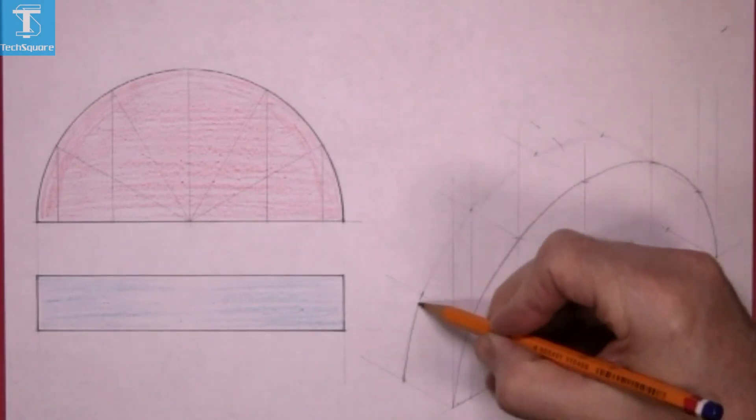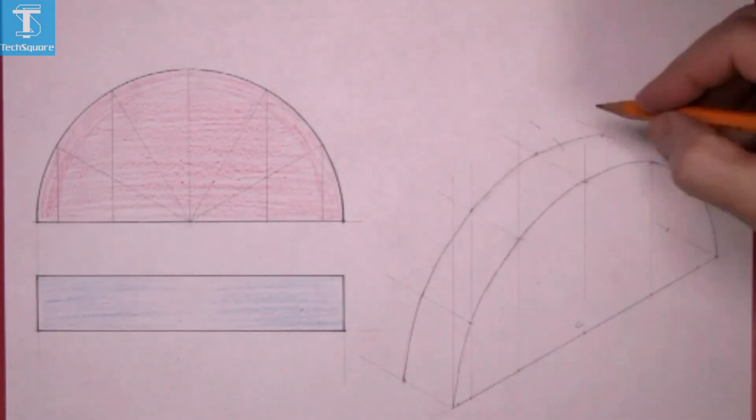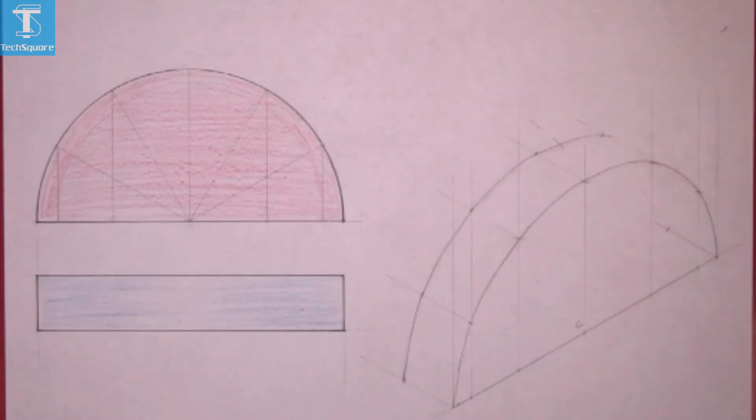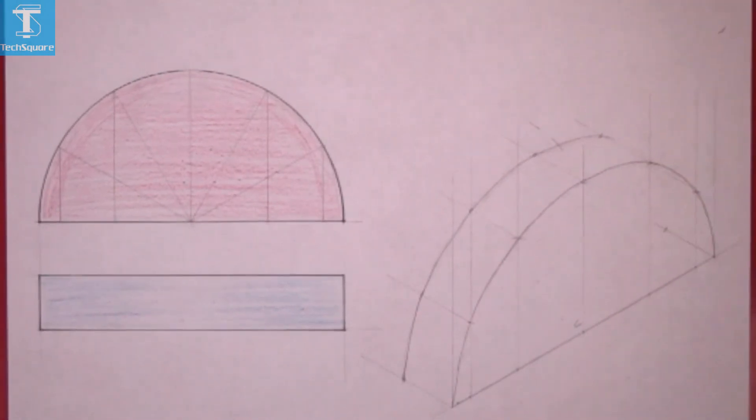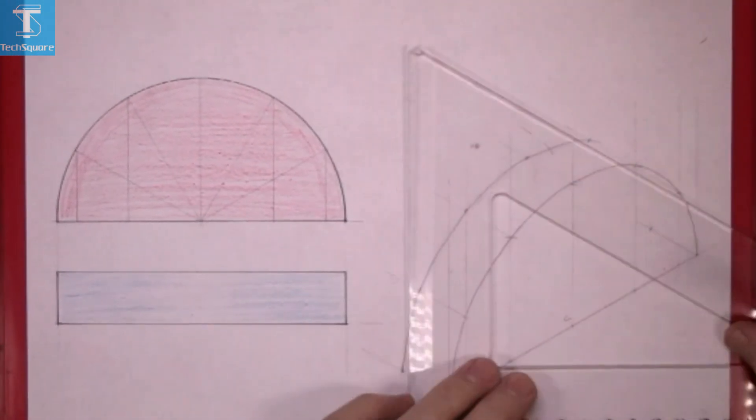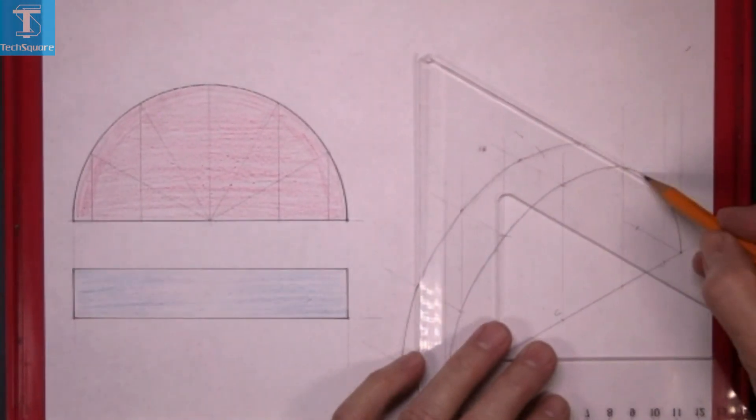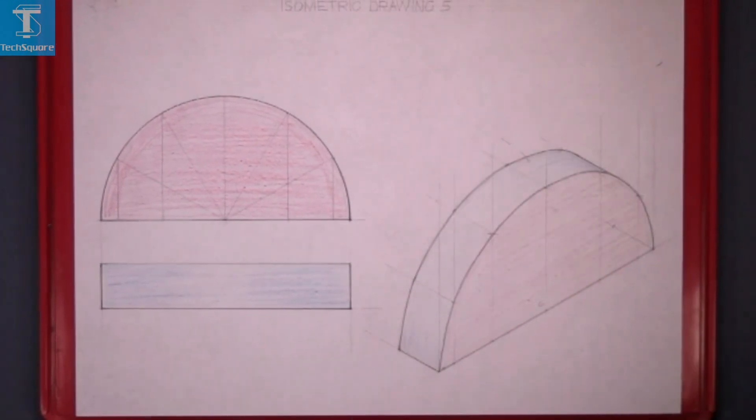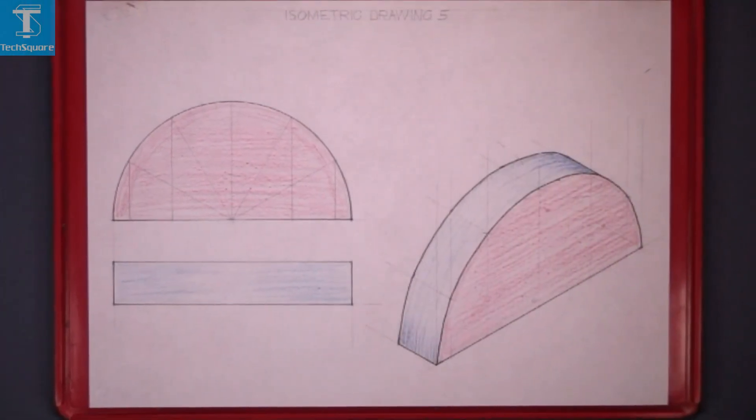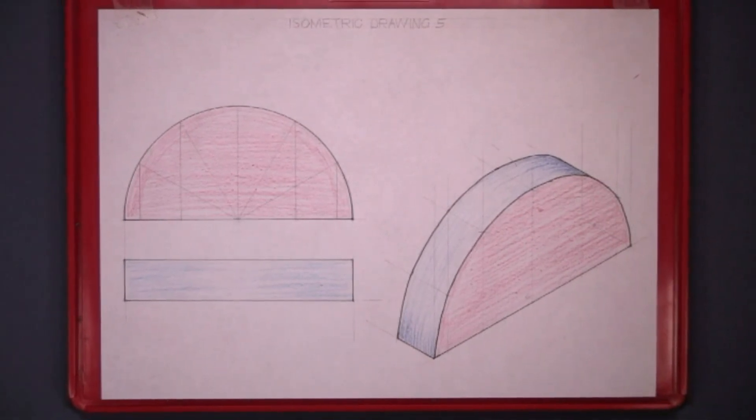Just line it in. Now when you get up to the top here, we have to draw a straight line at 30 degrees, a tangent to the curve there. And just finish it out then and add a bit of colour to it, and that's the isometric drawing five complete.